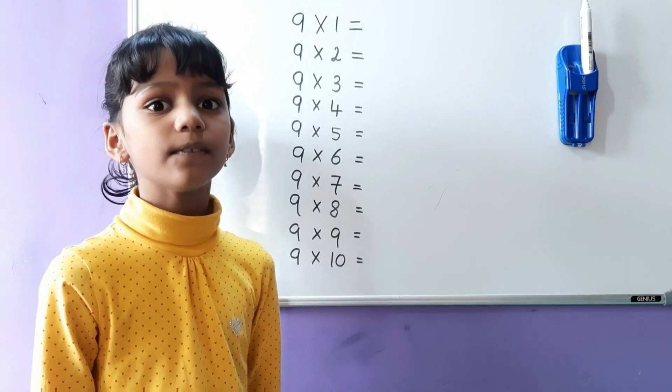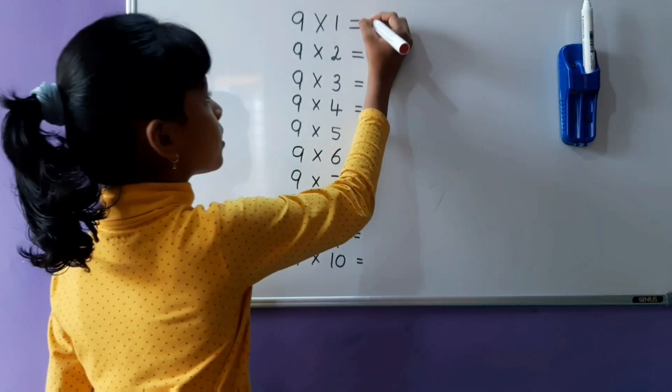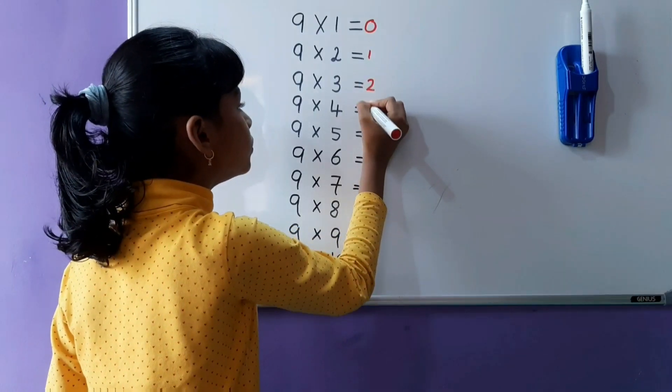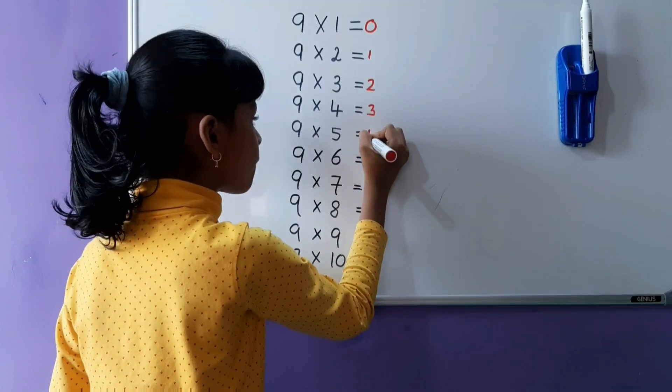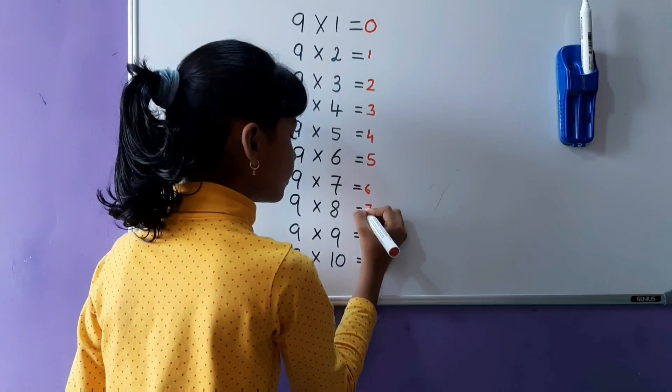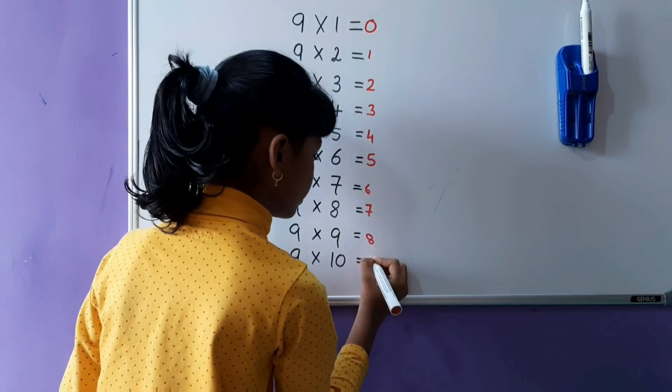First, try 0 to 9 forward counting: 0, 1, 2, 3, 4, 5, 6, 7, 8, 9.